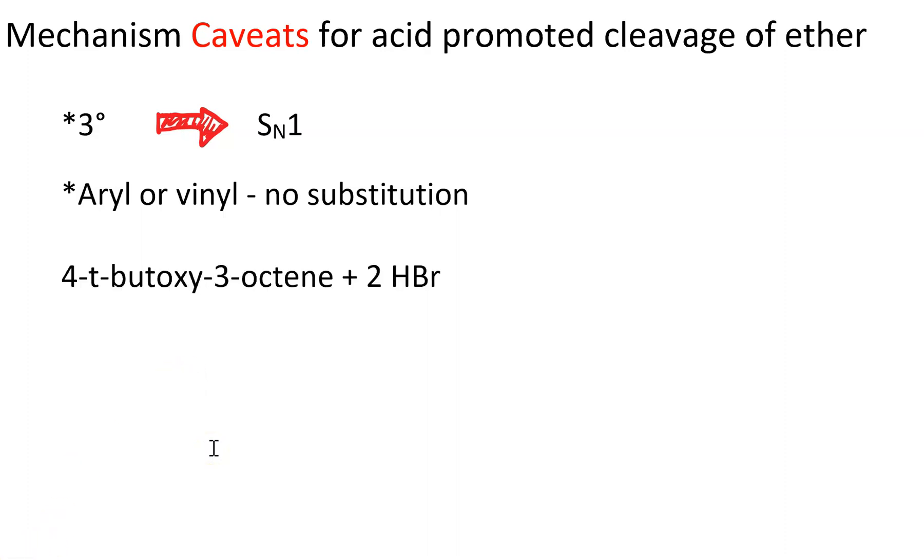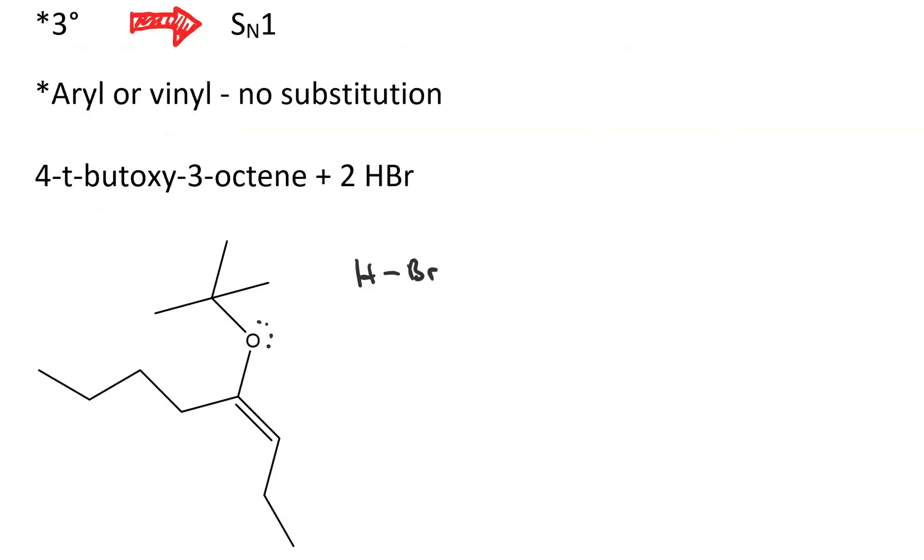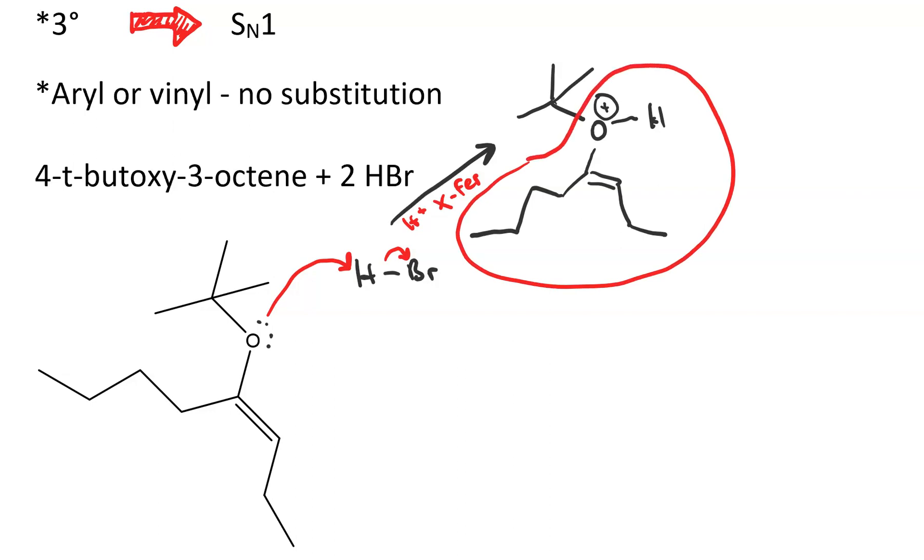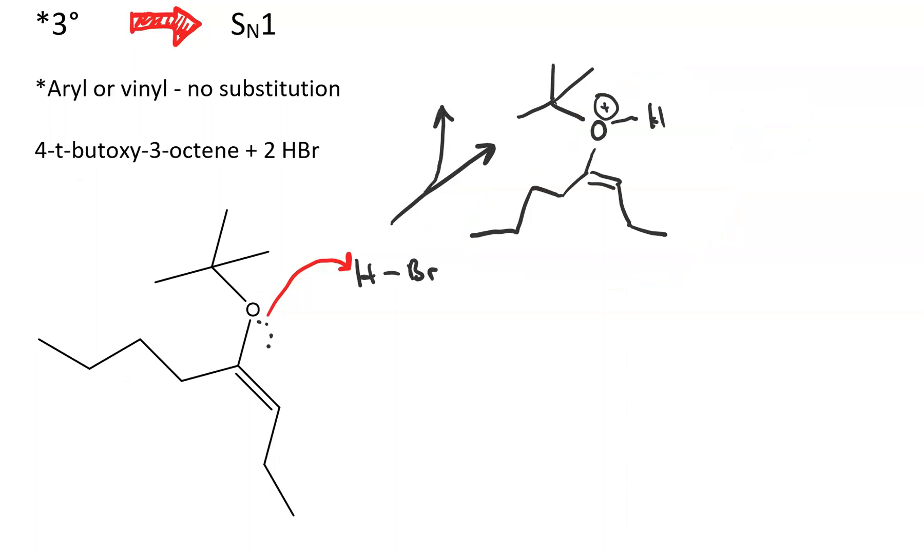To see this in action let's take a look at 4-t-butoxy-3-octyne with excess hydrobromic acid. First we get proton transfer from the acid to the ether. The resulting protonated ether contains an alcohol which is a good leaving group, but we can't have nucleophilic attack. This proton transfer does however spit out a bromide ion which will be important later.